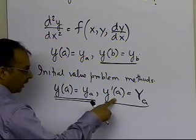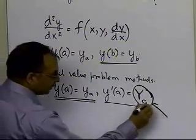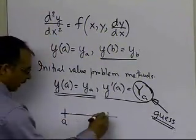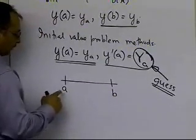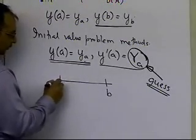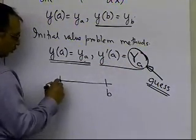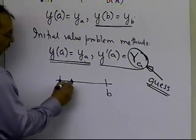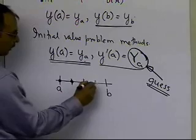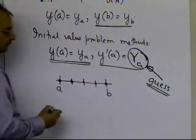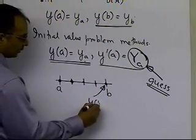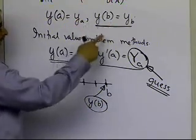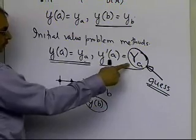So you're going to guess the initial slope y'(a) — let's call it uppercase Y_a — and march from a to b using Euler's method or Runge-Kutta methods, finding y at each step. Eventually you get a value of y at b. But that computed y_b is not going to be the same as the given boundary value, because there's no way to know whether your guess was appropriate.